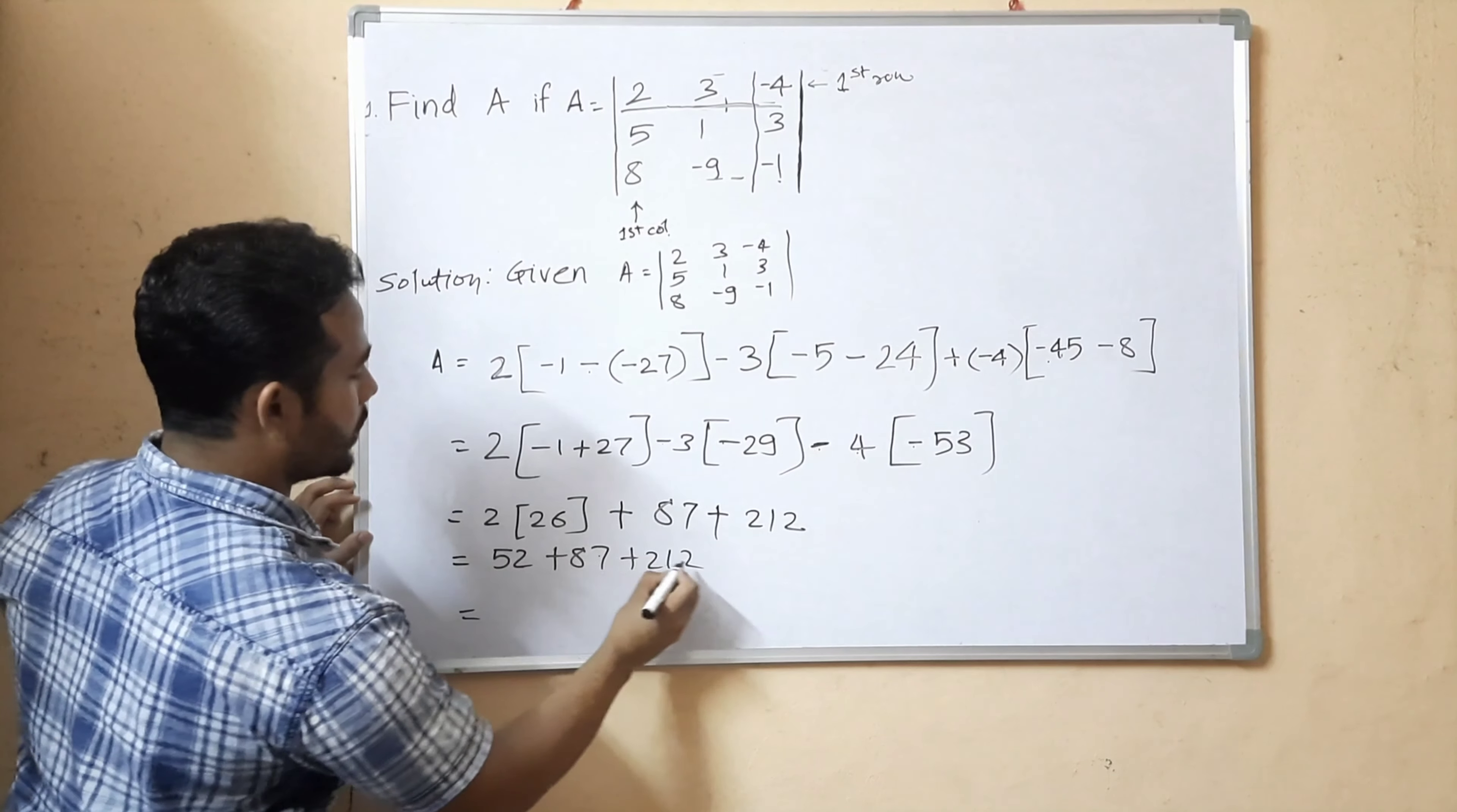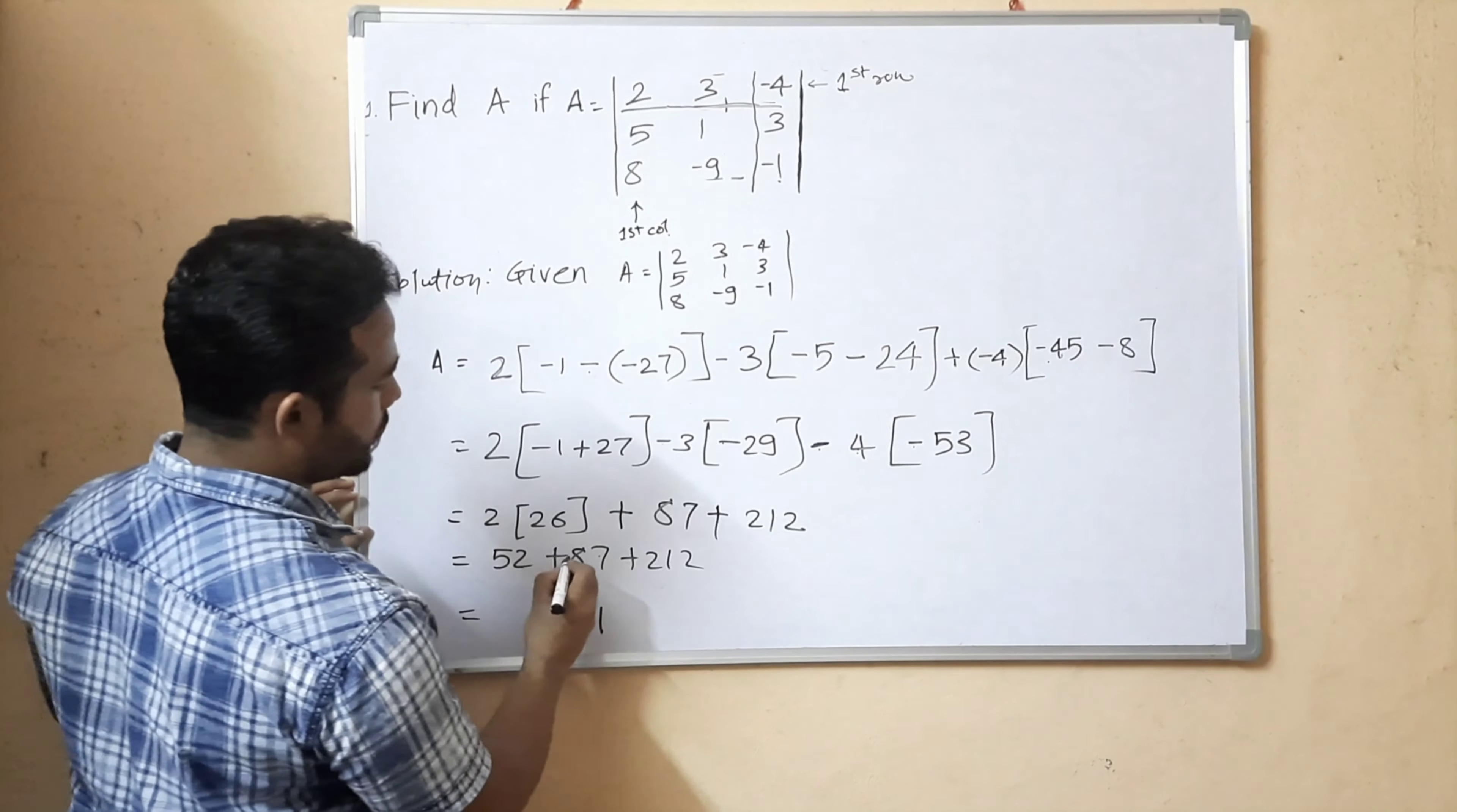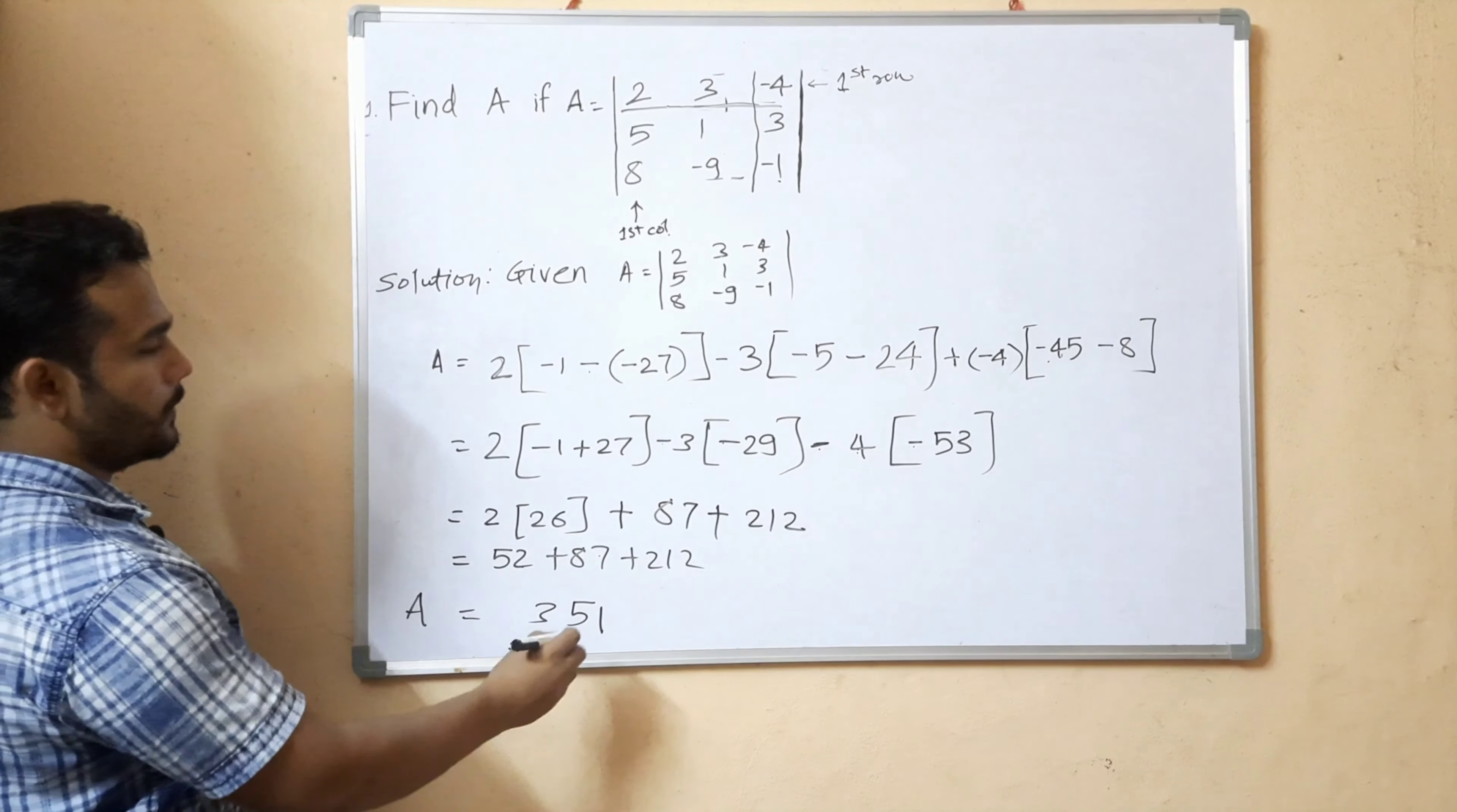Adding them up: 2 plus 7 plus 2 equals 11, carry 1. 5 plus 8 plus 1 equals 14, carry 1. 2 plus 1 equals 3. The determinant value is 351.